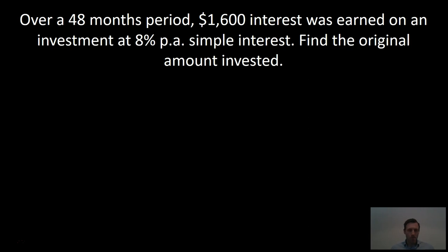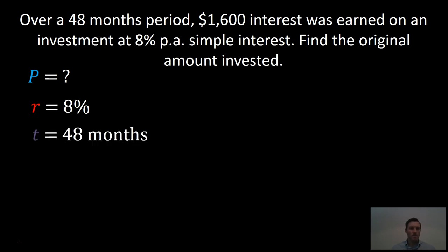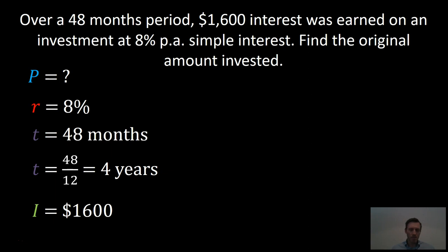Let's look at an example. Over a 48-month period, $1,600 interest was earned on an investment at 8% per annum simple interest. Find the original amount invested. So we're looking to find P, which is the principal. We have an interest rate of 8%. The time is 48 months, which we convert to years by dividing by 12, giving us 4 years. And the interest was $1,600.